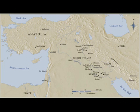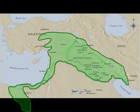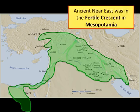Like the Neolithic Revolution, the Ancient Near East took place in Mesopotamia, also known as the Fertile Crescent. It's called the Fertile Crescent because of the richness of the land between the Tigris and Euphrates rivers, allowing for farming and therefore an increase in population.